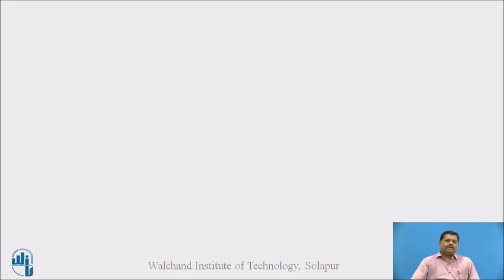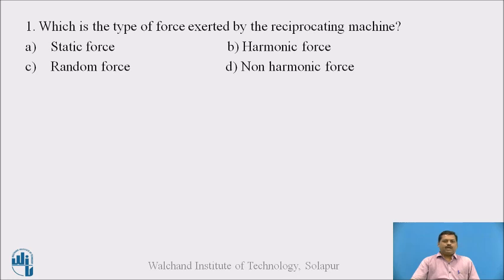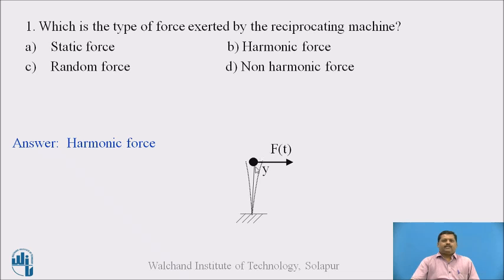Here is a question: what is the type of force exerted by the reciprocating machine? The four options are: A — static force, B — harmonic force, C — random force, D — non-harmonic force. You can pause the video and think about the answer. The answer is harmonic force. Whenever the time-dependent force acts on the mass, the mass vibrates on both sides of the neutral position — the vertical line of the pendulum. Displacements occur on both sides, which is why it is called a harmonic force, also known as harmonic excitation.